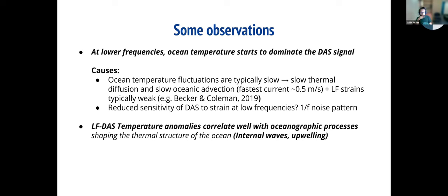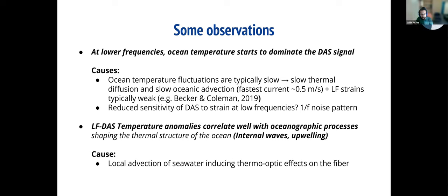The temperature anomalies we see correlate very well with oceanographic processes such as internal waves. The most likely cause is the local advection of seawater inducing thermooptic effects on the fiber — changing the refractive index of the fiber — as the water cools or heats up, leading to diffusion on the fiber itself.